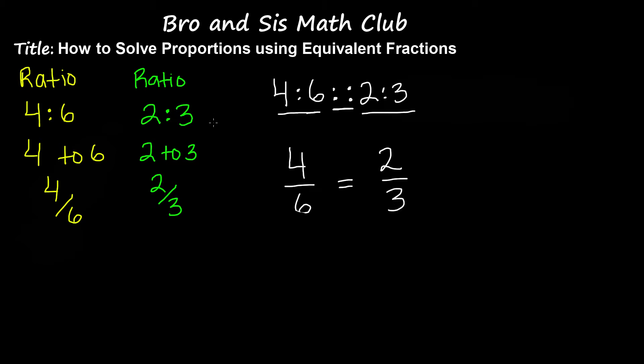Now let me tell you about equivalent fractions. Equivalent fractions are fractions that are equal. To get equivalent fractions, you must either multiply both the numerator and the denominator by the same number or divide both the numerator and the denominator by the same number.